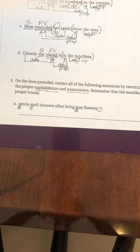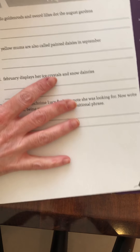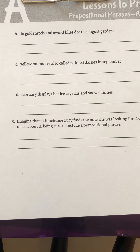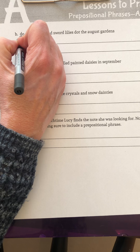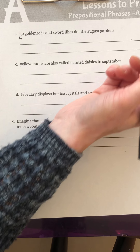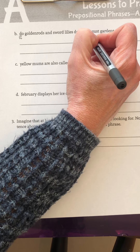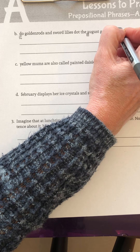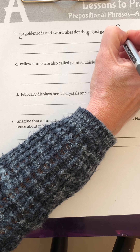All right, let's move on to the next page. You are ready to start checking that work. For letter B, you should have marked the D of do with three lines under it, and you should have the A of August triple underlined, and you should have a question mark with a circle around it because this is a question.